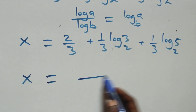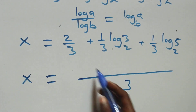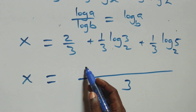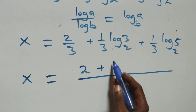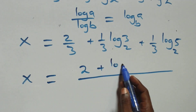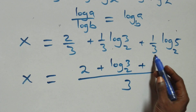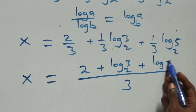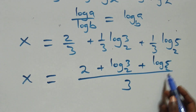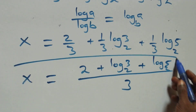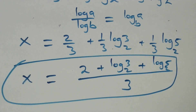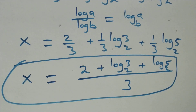We bring this together as one fraction and we have x equals to 2 plus log 3 base 2 plus log 5 base 2, all over 3. That is the value of x in this problem. Now let's check if this satisfies the given equation.